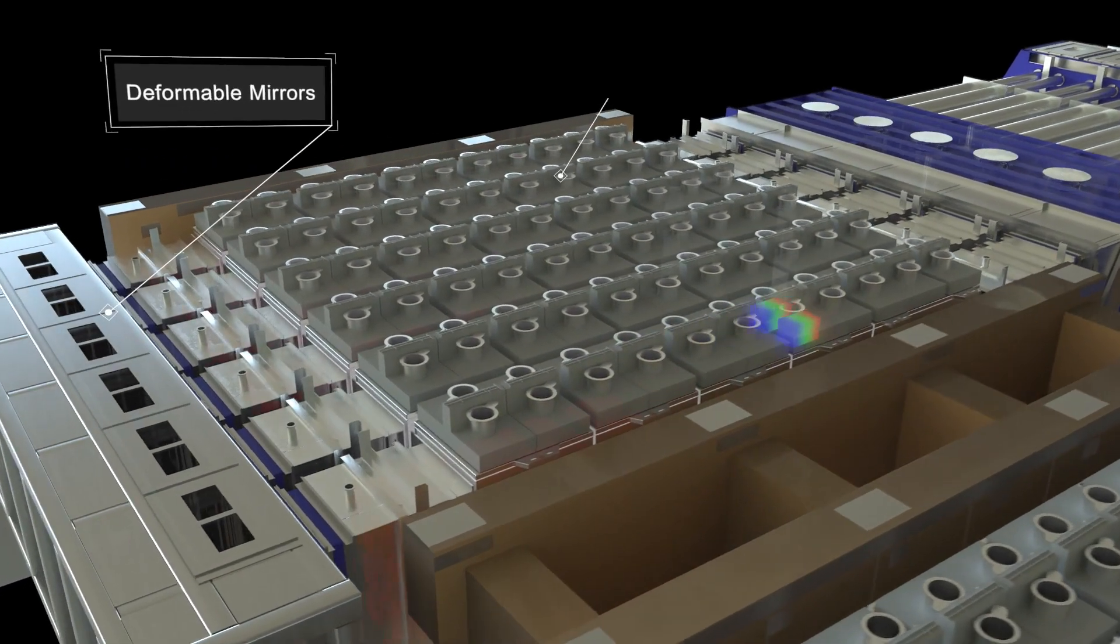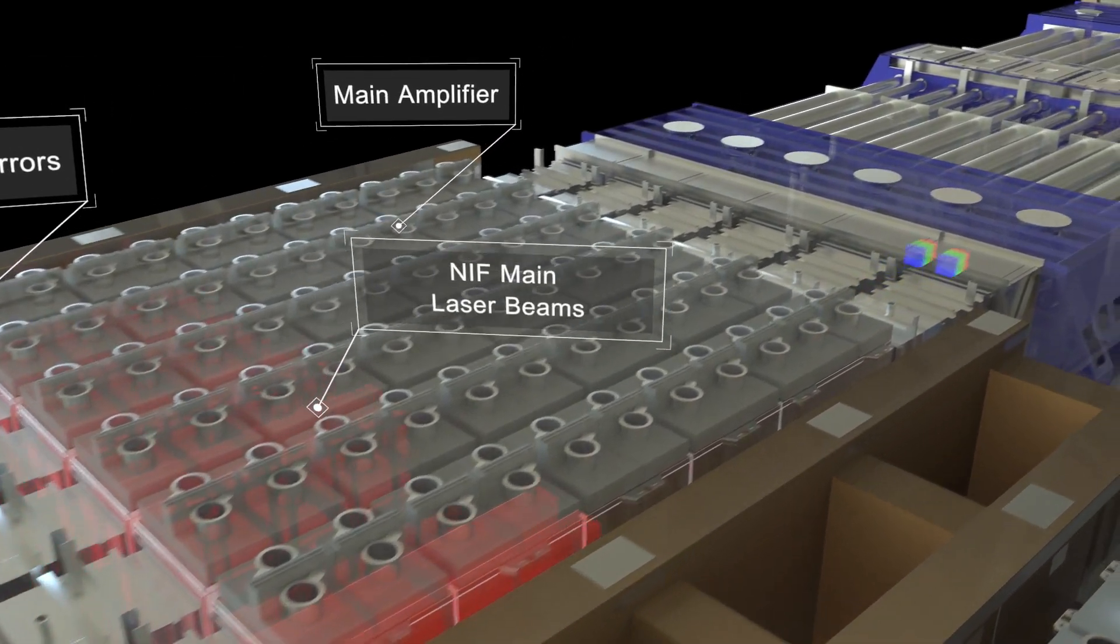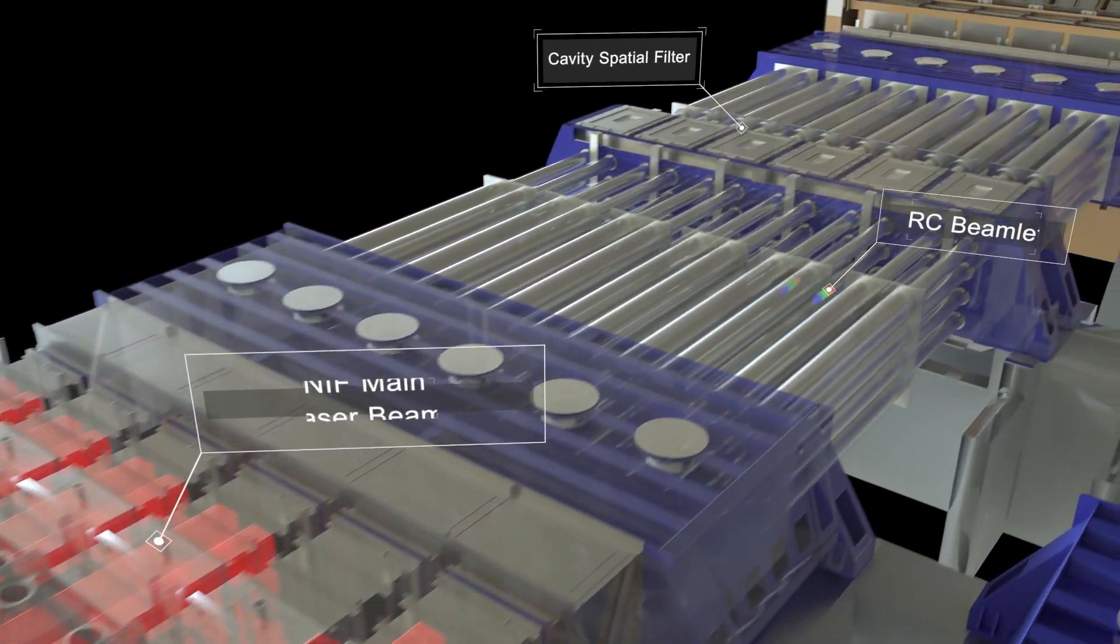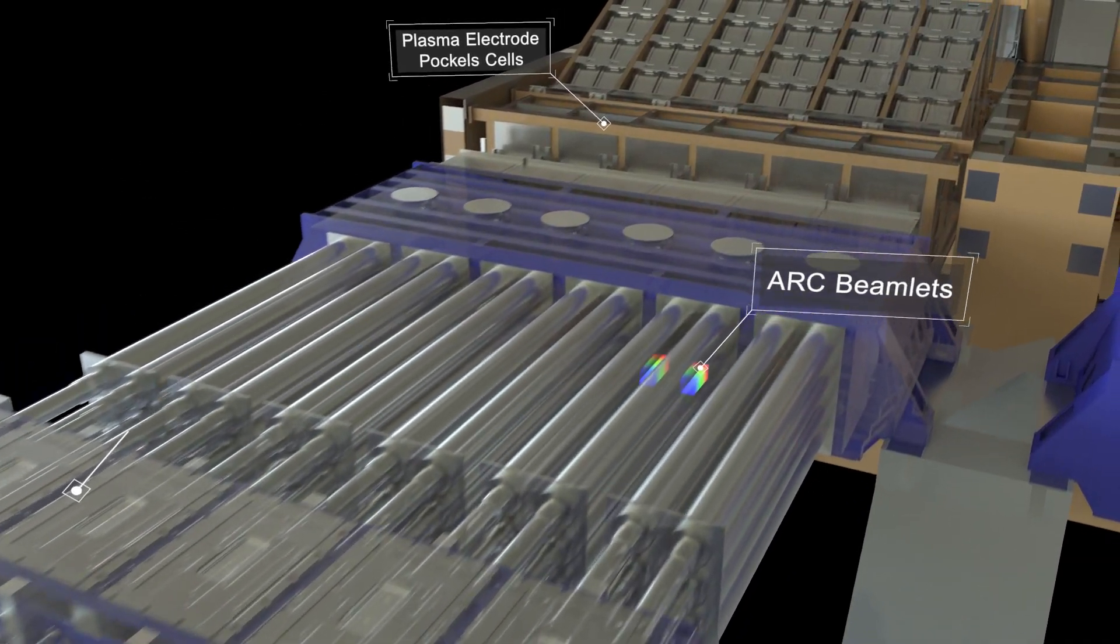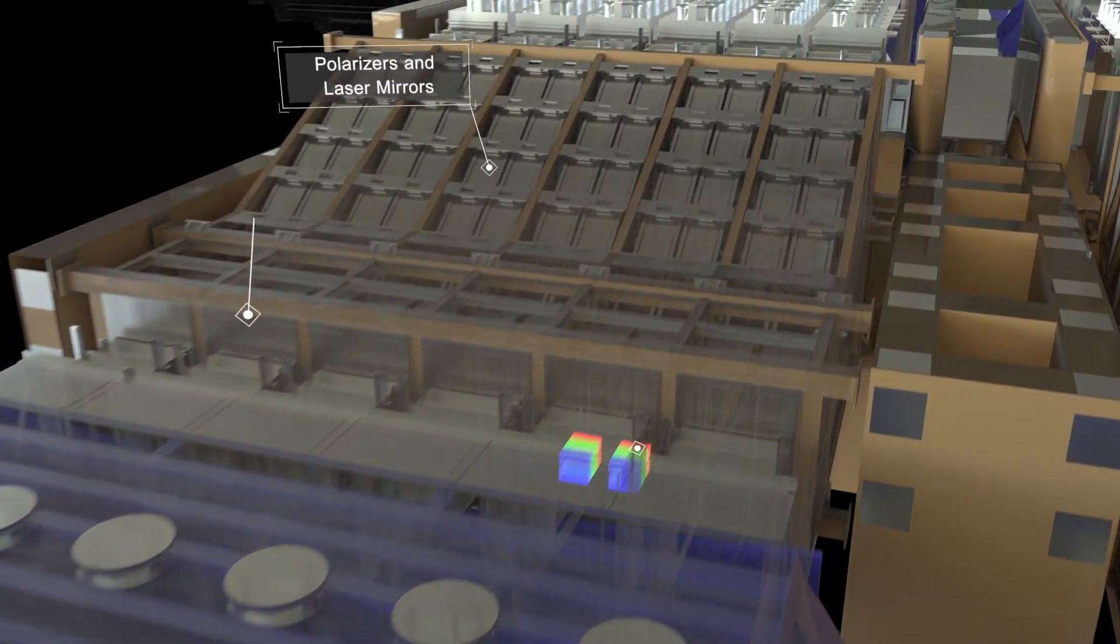Inside the National Ignition Facility called NIF, its main lasers, shown in red, trail close behind the two pairs of rainbow-colored beamlets from the Advanced Radiographic Capability Laser, or ARC.